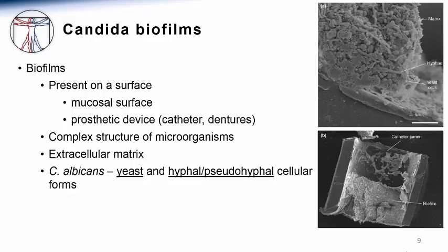The cells transition to more filamentous forms that invade surrounding tissue and give stability to the grown biofilm. As the biofilm develops, the microbial cells are surrounded by a complex mixture of extracellular matrix comprised of both host and fungal components. Because of this complex structure, biofilms are quite resistant to host immune attack as well as antifungal drug penetration, and this provides a protected site for fungal growth.